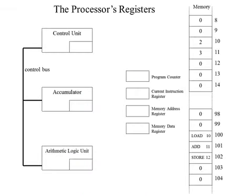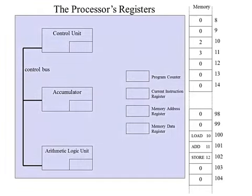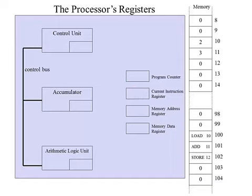Now let's think about the registers inside the CPU. The blue box shows the CPU, and we can see inside there we've got a control unit, the accumulator, and the arithmetic and logic unit. We've also got some other registers: the program counter, the current instruction register, the memory address register, and the memory data register. We're going to take a look at how these different registers cooperate to run the program.